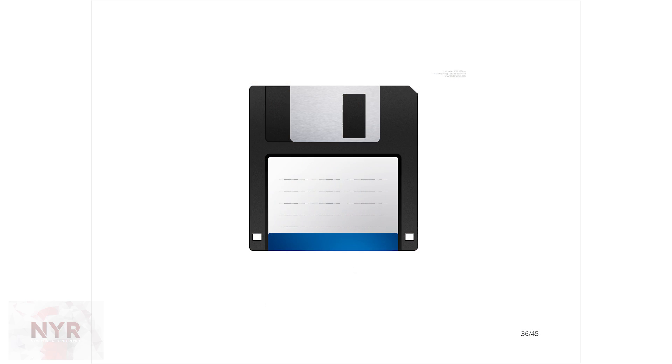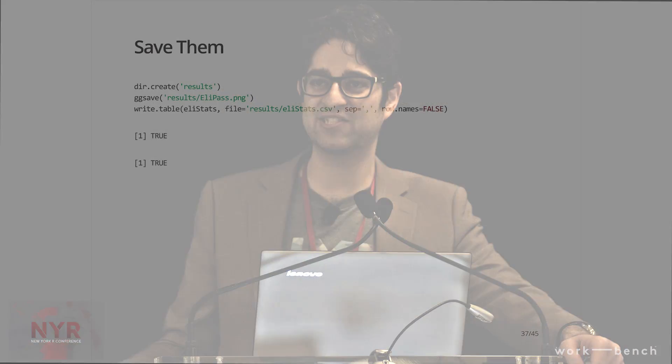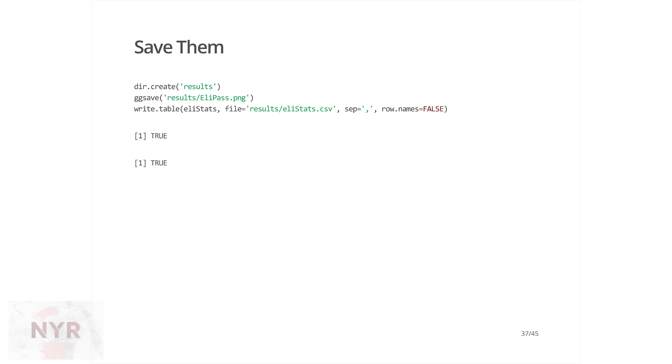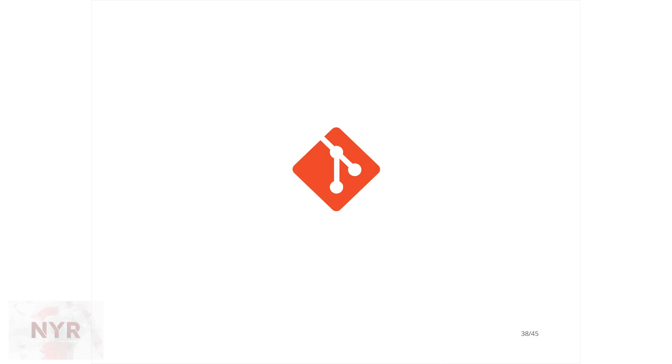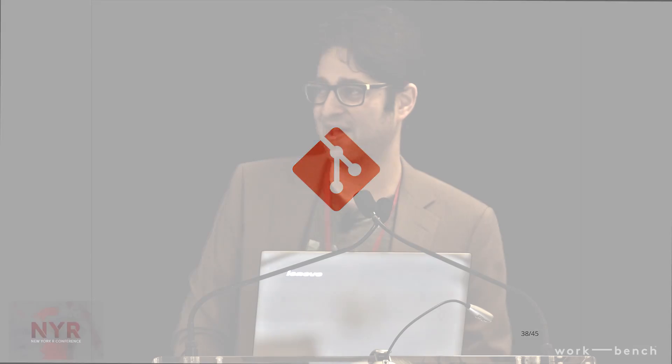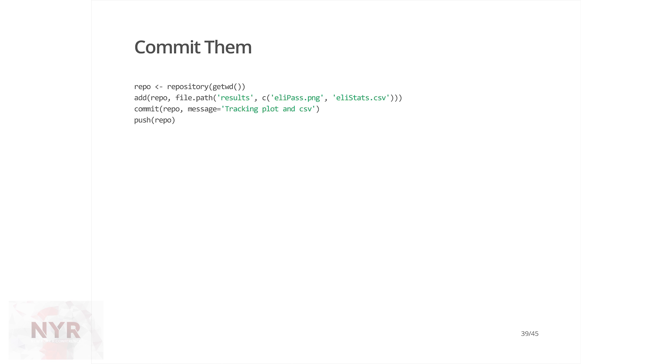Now that we have this file and this image, we want to save them to disk. We create a new directory, use ggsave to save the last plot, and write.table to write the CSV. Never use row.names equals TRUE when writing to a CSV — it screws up the formatting. Then, to commit to git without going to the command line, we use the git2r package. We specify our repo as the current working directory, add our files, commit them with a good message, and push. We went through our entire work process and pushed to git without ever leaving R.